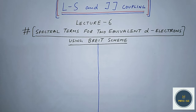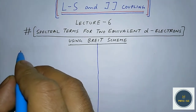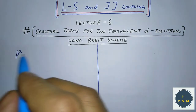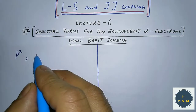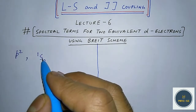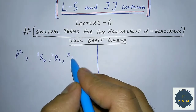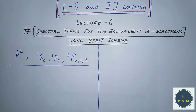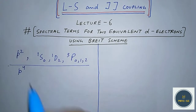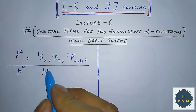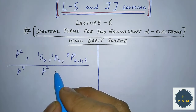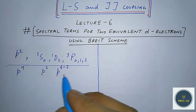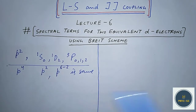We know what equivalent electrons are. Last time we found the spectral terms for two equivalent p-electrons. Those were: ¹S₀, ¹D₂, and the triplet P, which gives three P-terms. We also know these are the same as the terms for the p⁴ configuration, because the terms for p² and p⁶⁻² are the same. We have already studied this.